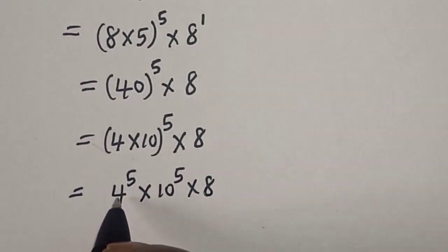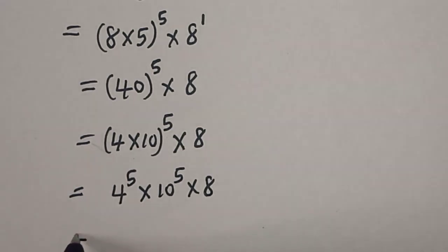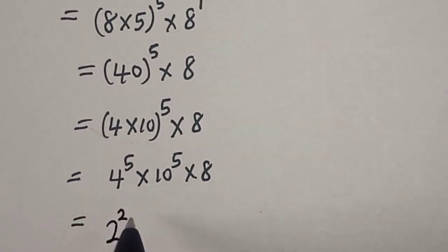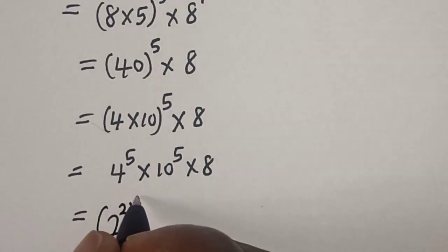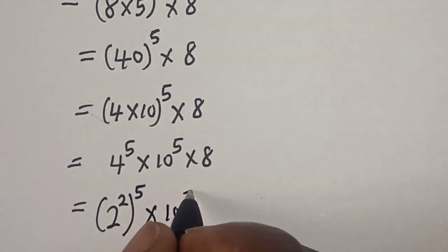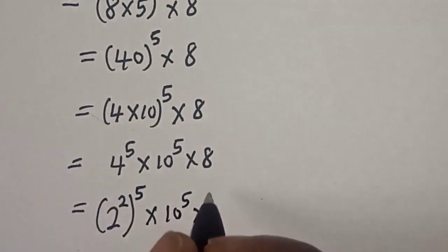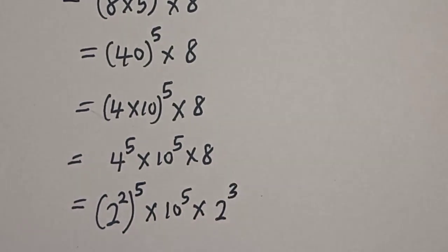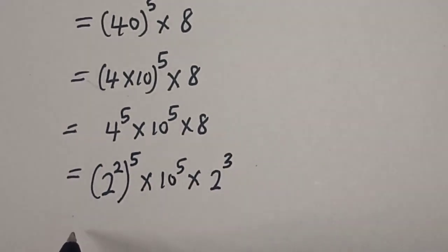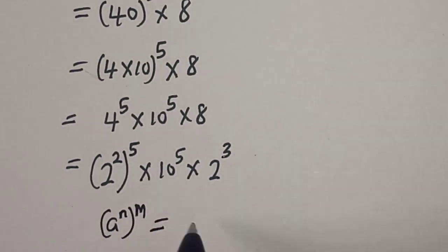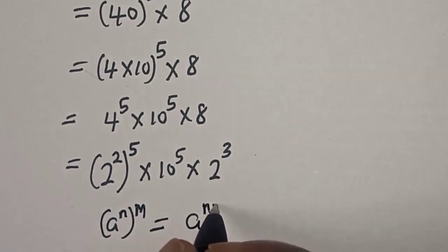This is equal to 4 raised to power 5 multiplied by 10 raised to power 5, multiplied by 8. Now 4 raised to power 5 can be written as 2 raised to power 2, to the power of 5. Remember this rule: a raised to power n to the power of m is equal to a raised to power n times m.